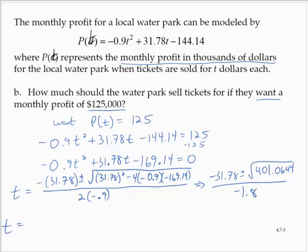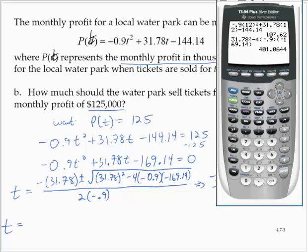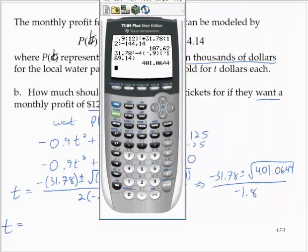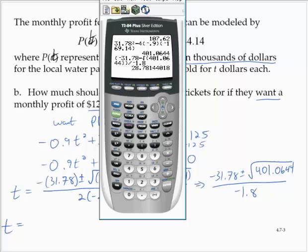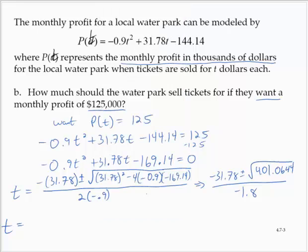Continuing to use the calculator, let me scoot this over. Alright, (-31.78 - √401.0644) / -1.8. Hit Enter. Gives us 28.78.